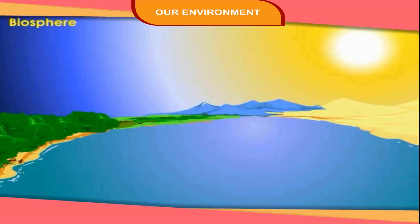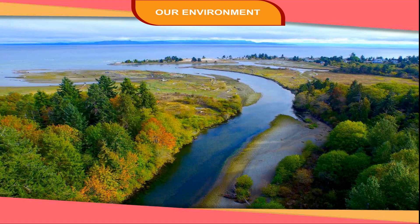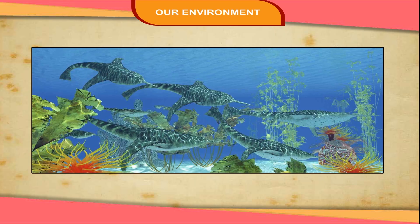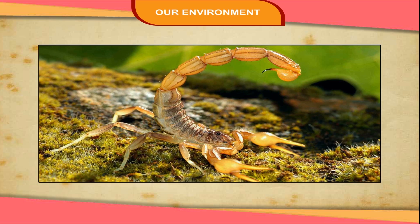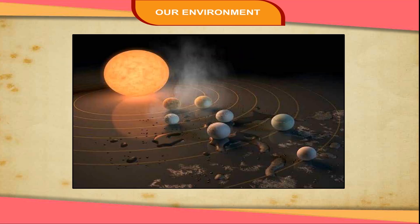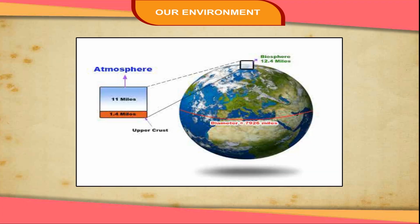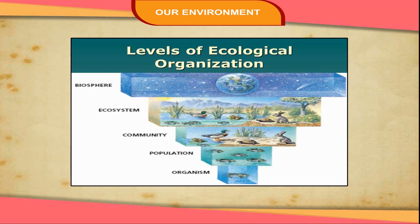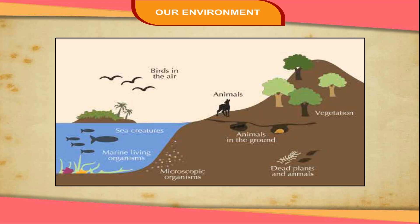Biosphere. The life-bearing layer of the earth's surface is called the biosphere. This is a small zone of interaction of air, water and land where living organisms survive. Some organisms live in the air slightly above the surface of the earth, some live in water, and remaining organisms live on the surface of the earth. The biosphere is a unique feature of our earth. It is because of this zone that life can exist and flourish. Life is not possible outside the limits of the biosphere. Biosphere consists of a great variety of flora and fauna. Life is not possible on other planets as they do not have the biosphere.